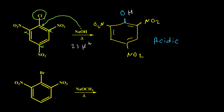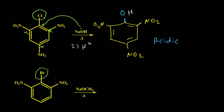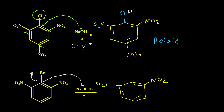In the second example, the leaving group is bromine, and we have electron-withdrawing groups (2 NO2 groups) on the ortho positions, so this compound is also eligible for NAS reaction. Our nucleophile is the methoxide anion, OCH3, so OCH3 can easily kick bromine out of the structure. The final product has NO2 and NO2, and OCH3 in place of bromine.